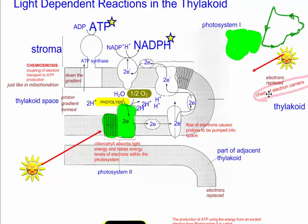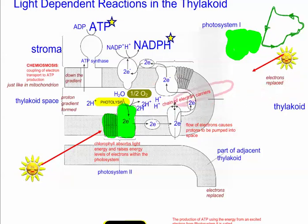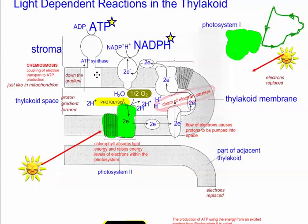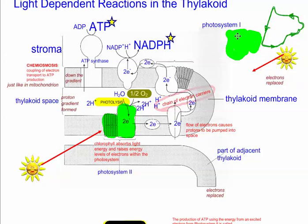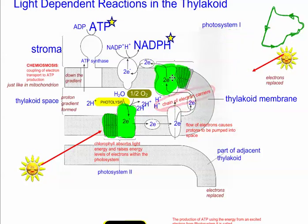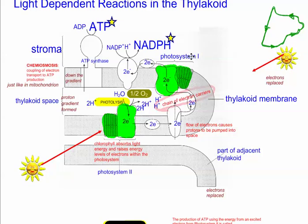This chain of electron carriers sits in the thylakoid membrane. There's another place that light can be absorbed — through another chlorophyll unit called Photosystem I, or PS1. It's the older model. Photosystem I can also absorb light directly, and electrons can be bumped over here.